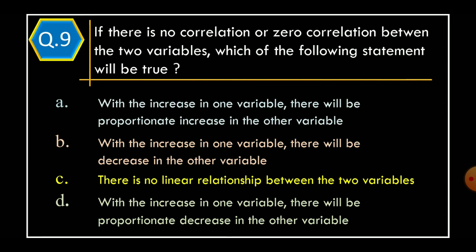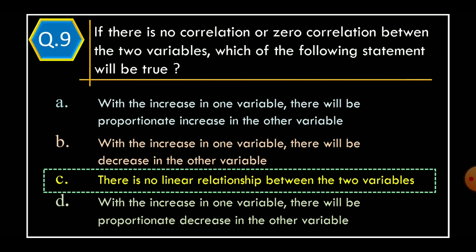Question 9. If there is no correlation or zero correlation between two variables, which of the following statements will be true? Option A: With increasing one variable, there will be a proportionate increase in the other variable. Option B: With increasing one variable, there will be a decrease in the other variable. Option C: There is no linear relationship between the two variables. Option D: With increasing one variable, there will be a proportionate decrease in the other variable. The correct option is Option C, there is no linear relationship between the two variables.